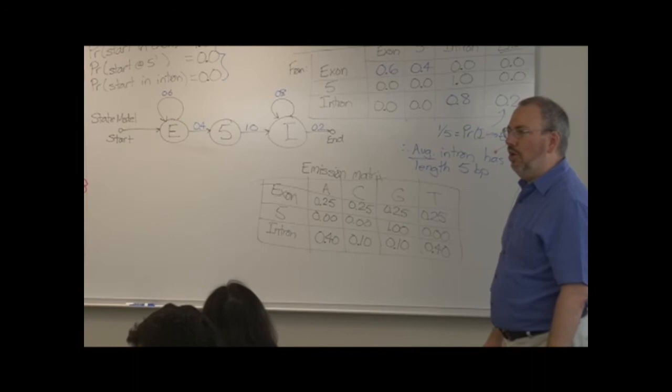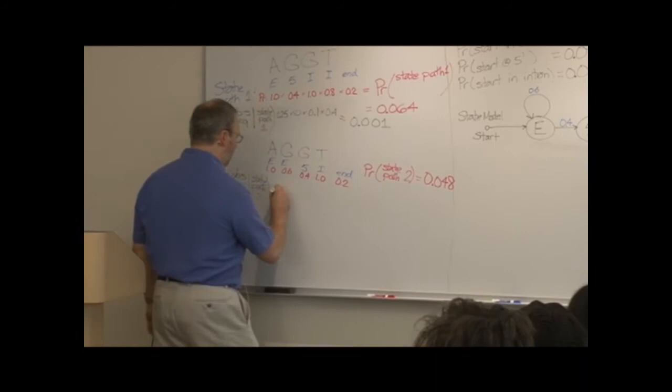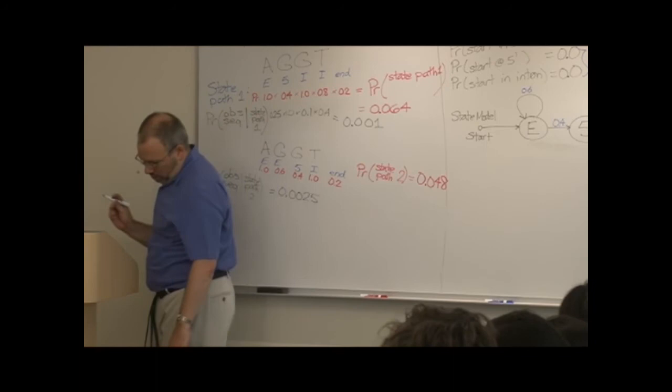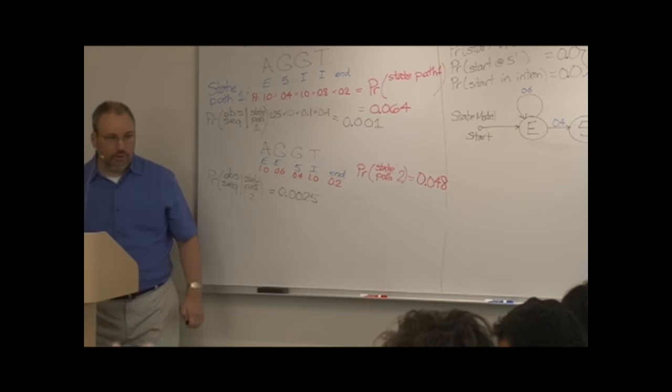Zero, zero, two, five. Going twice. I see more nods of agreement. And when I did this, I got point zero, two, five. Okay.